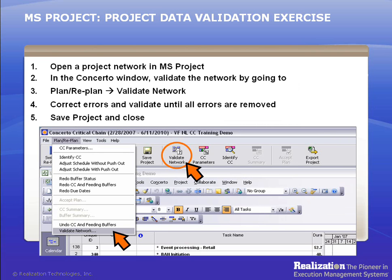Every task has a resource assignment. Fractional unit assignments are allowed in 0.05 unit increments; however, this is not recommended because it implies multitasking. There should be no duplicate resources in the Concerto Resources sheet. To validate a project network, simply click the Validate Network icon button. You can also select it from the Plan/Replan menu. If there are warnings or errors, validation will prompt you for corrections. A warning message does not require immediate action; however, error messages will cause the validation to fail and require that you fix the errors, such as a missing resource assignment for a task.